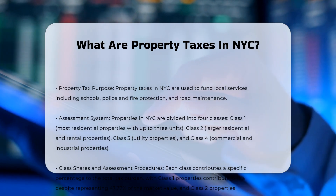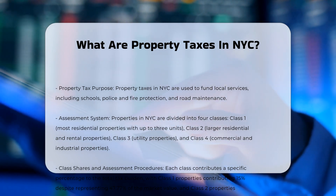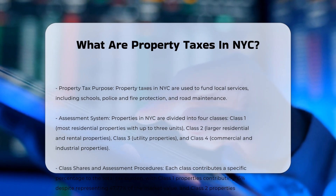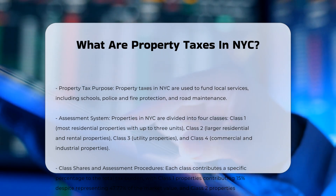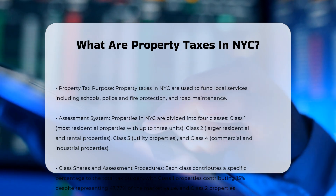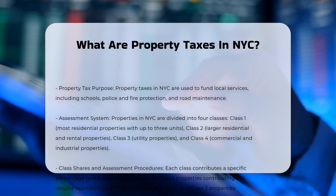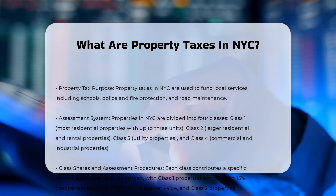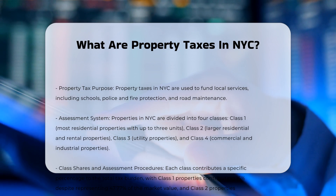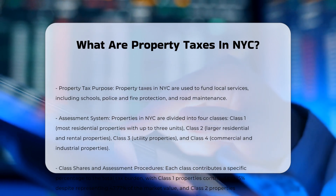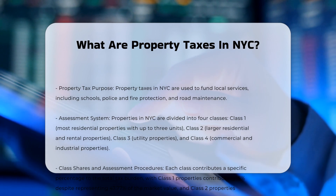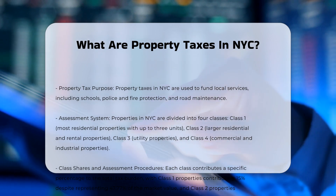Assessment System: In NYC, property is divided into four classes for tax purposes. Class 1 includes most residential properties with up to three units, while Class 2 includes larger residential properties, such as larger condominium buildings and rental properties. Class 3 covers utility properties, and Class 4 includes commercial and industrial properties.